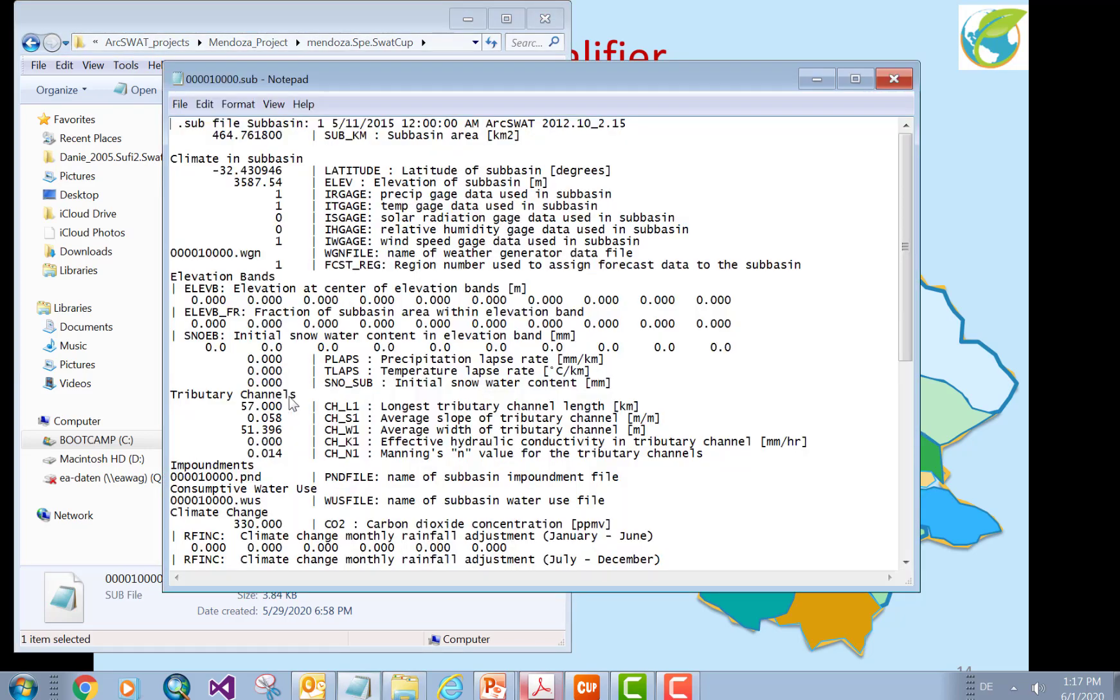If I go to sub-basin, again, here you see that these parameters can only be applied to sub-basin. So, in those qualifiers, I can only specify sub-basin number, right? I cannot give soil texture, land use, hydrological, or anything like that.